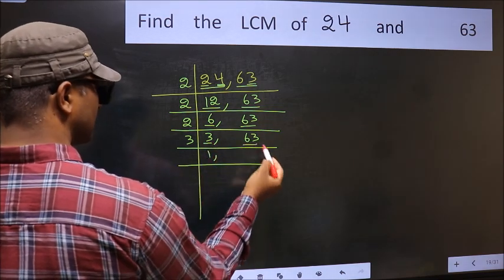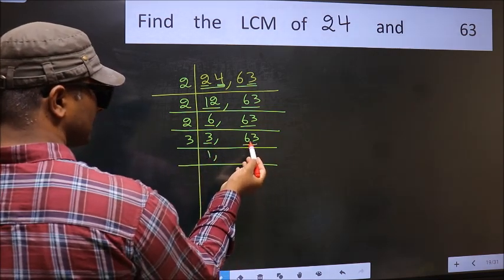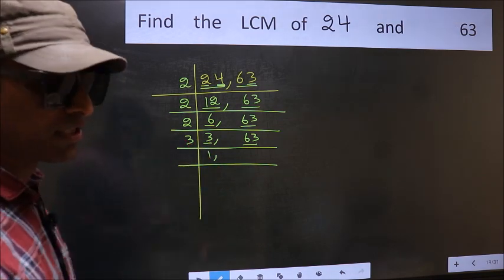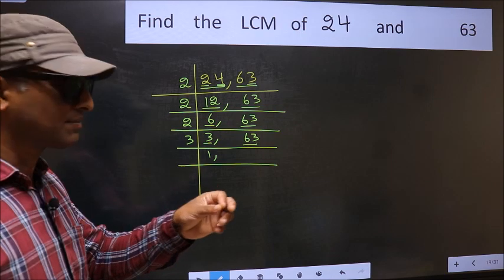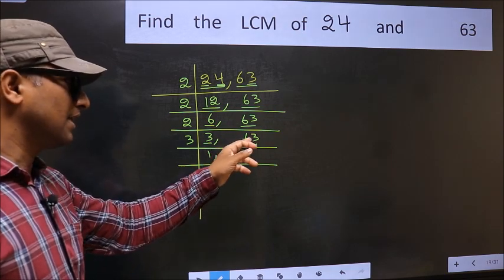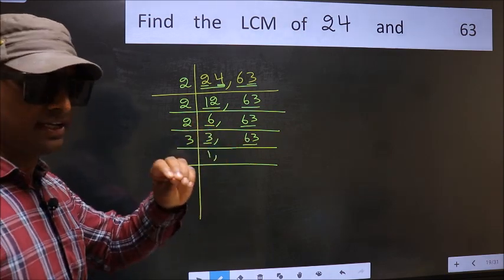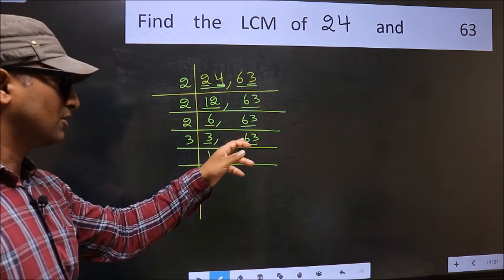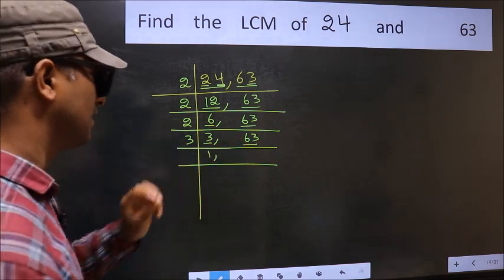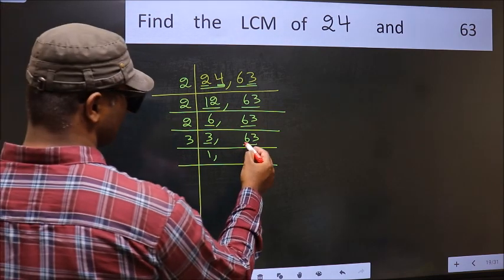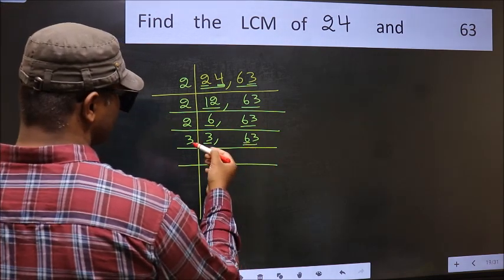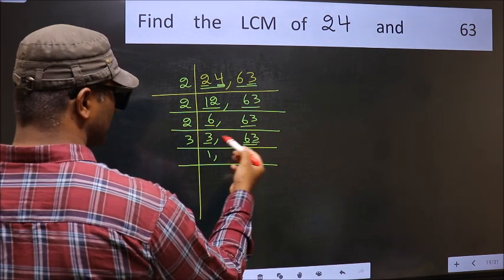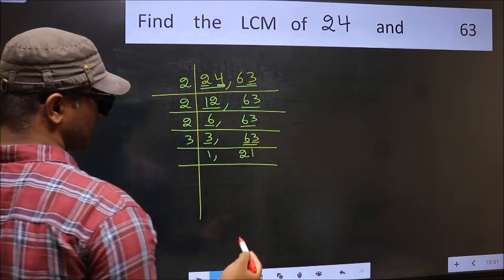The other number is 63. To check whether 63 is divisible by 3 or not, add the digits: 6 plus 3 equals 9, and 9 is divisible by 3, so this number is also divisible by 3. The first number is 6 — when do we get 6 in the 3 table? 3 times 2 is 6. The other number is 3 — when do we get 3 in the 3 table? 3 times 1 is 3.